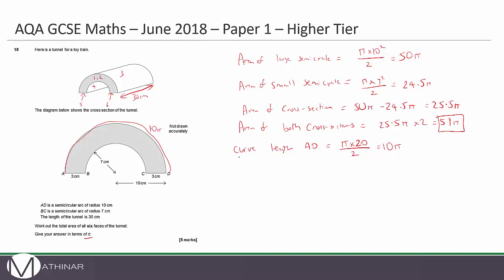So the large curved area, which is in the shape of a rectangle, is 10π multiplied by the length, which is 30. So that's 300π. We'll need this at the end. So that's area three done.